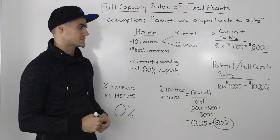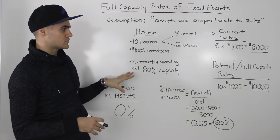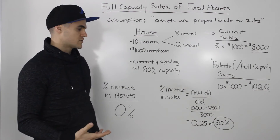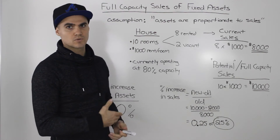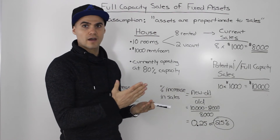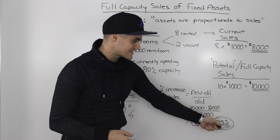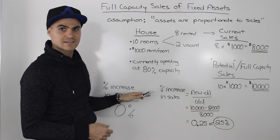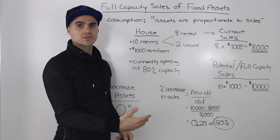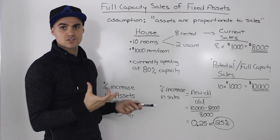Assets aren't always going to be operating at full capacity, so we'll go over examples in the future where we'll deal with that. I just wanted to start off with this simple example to show how we can disprove that assumption. Now what if you want to grow your sales by more than twenty-five percent from your current sales of eight thousand? Let's say you want to grow them by fifty percent — that means they'd grow by four thousand up to twelve thousand. However, your house currently only has ten rooms, so if you want to grow sales past that amount you're going to have to increase your assets, whether that's buying a new house or making an addition. Up to twenty-five percent you don't have to, but anything after twenty-five percent your assets are going to have to increase.